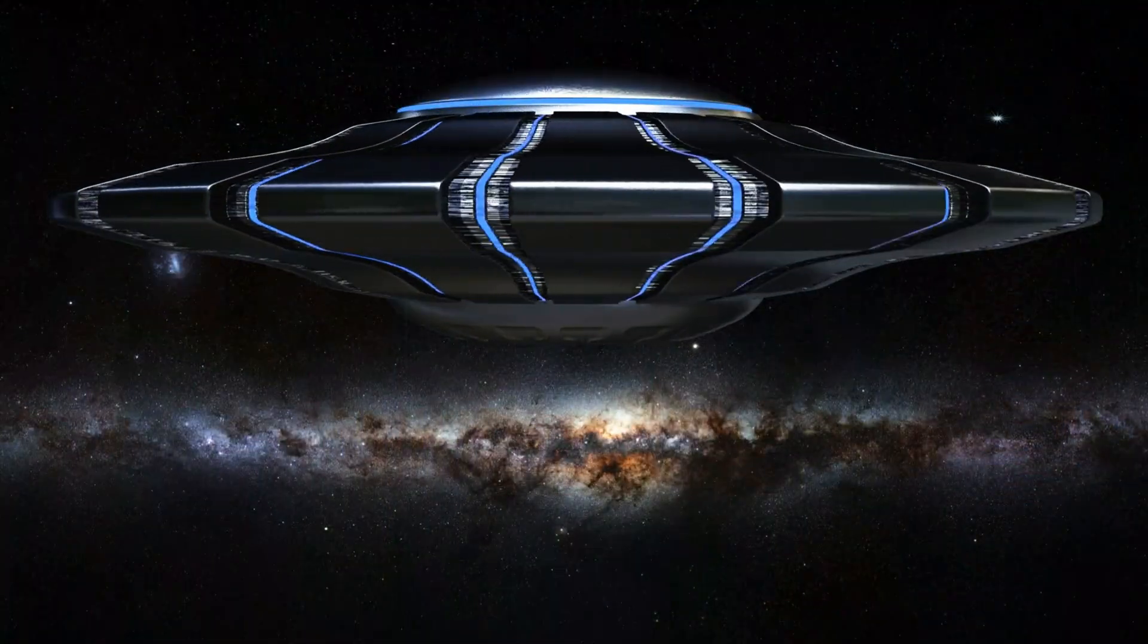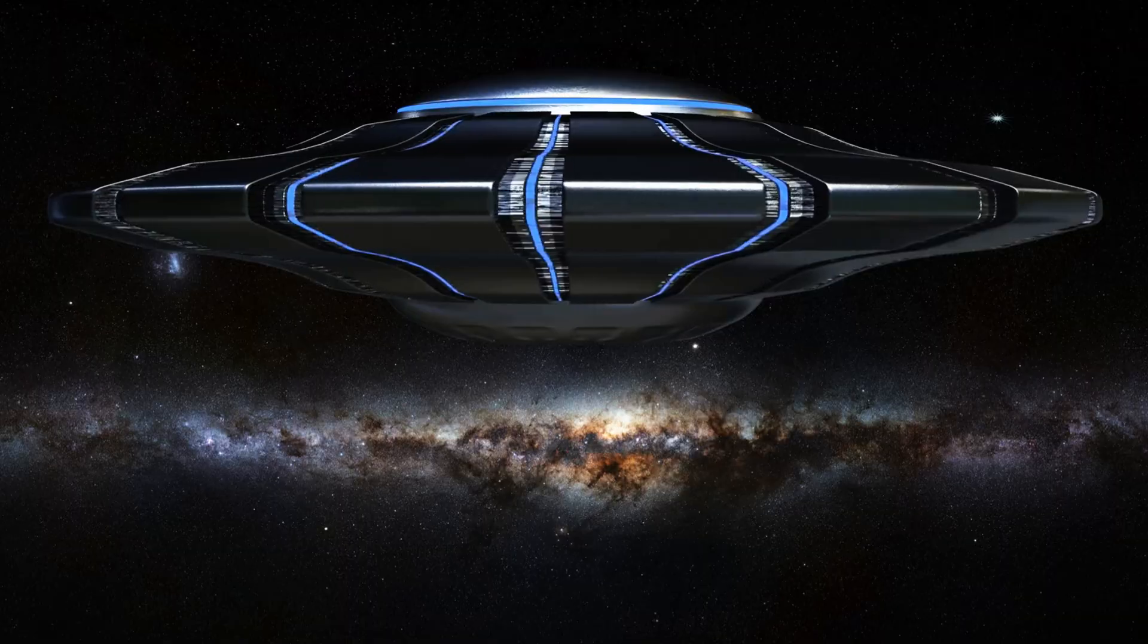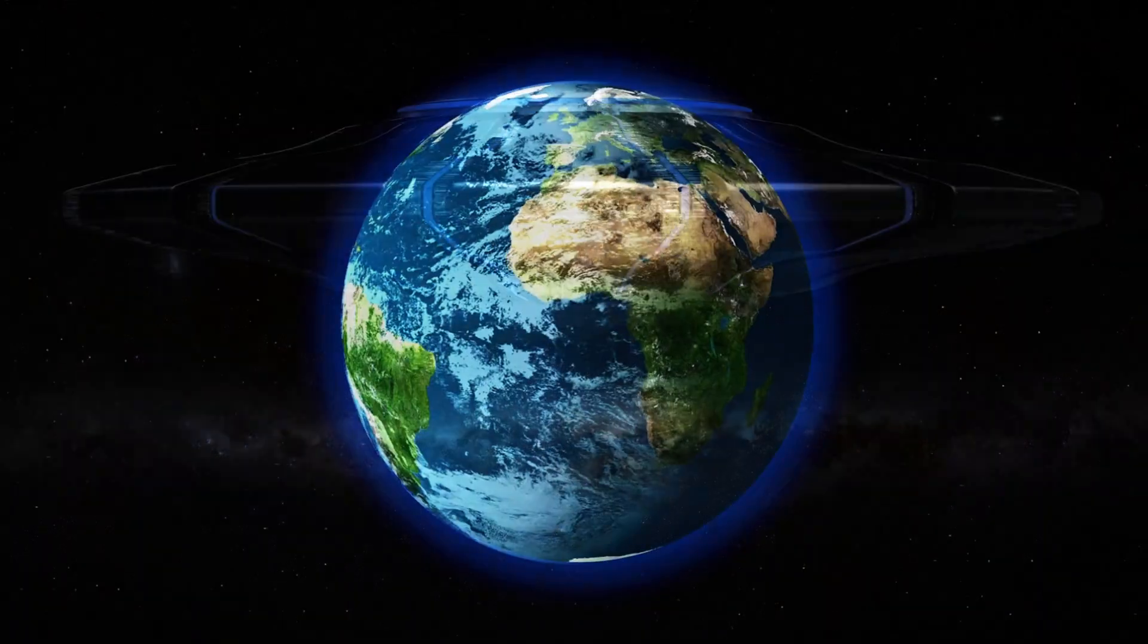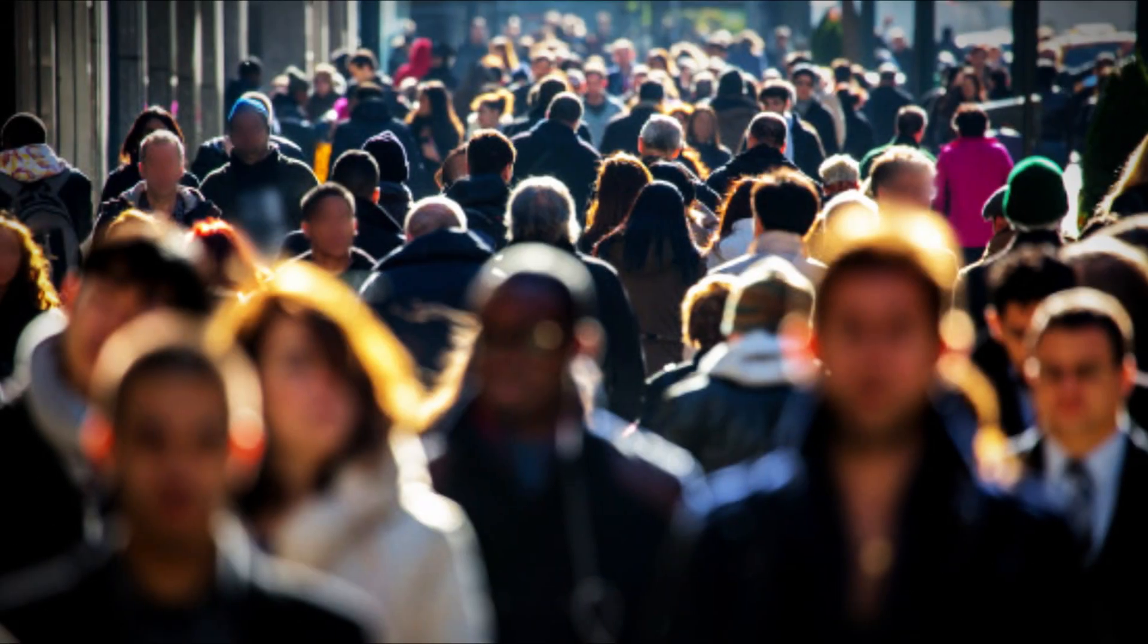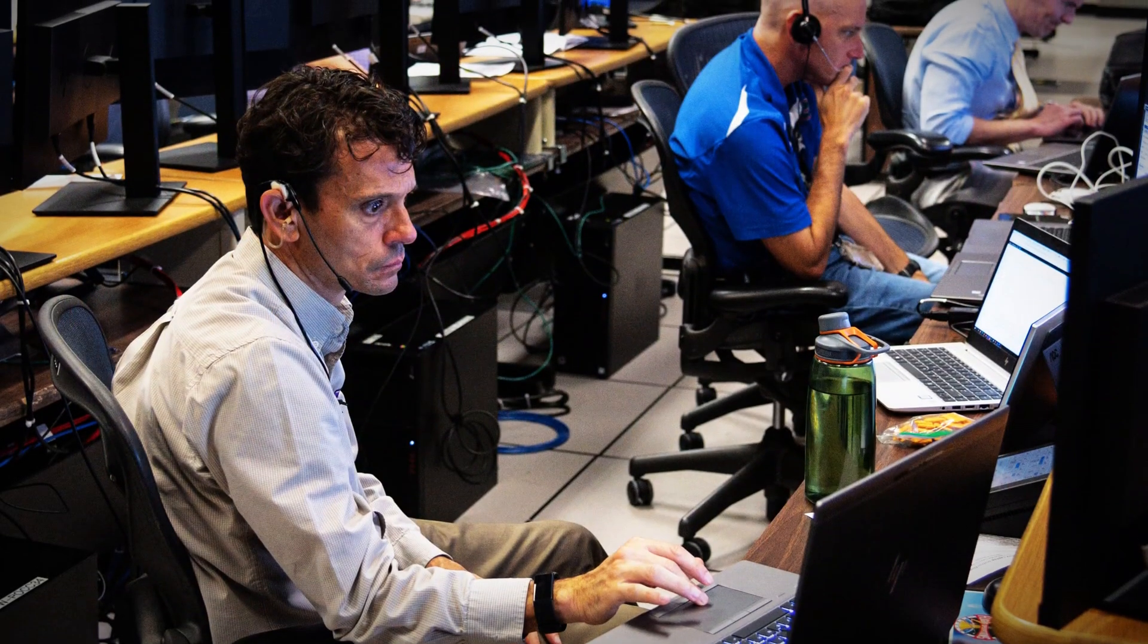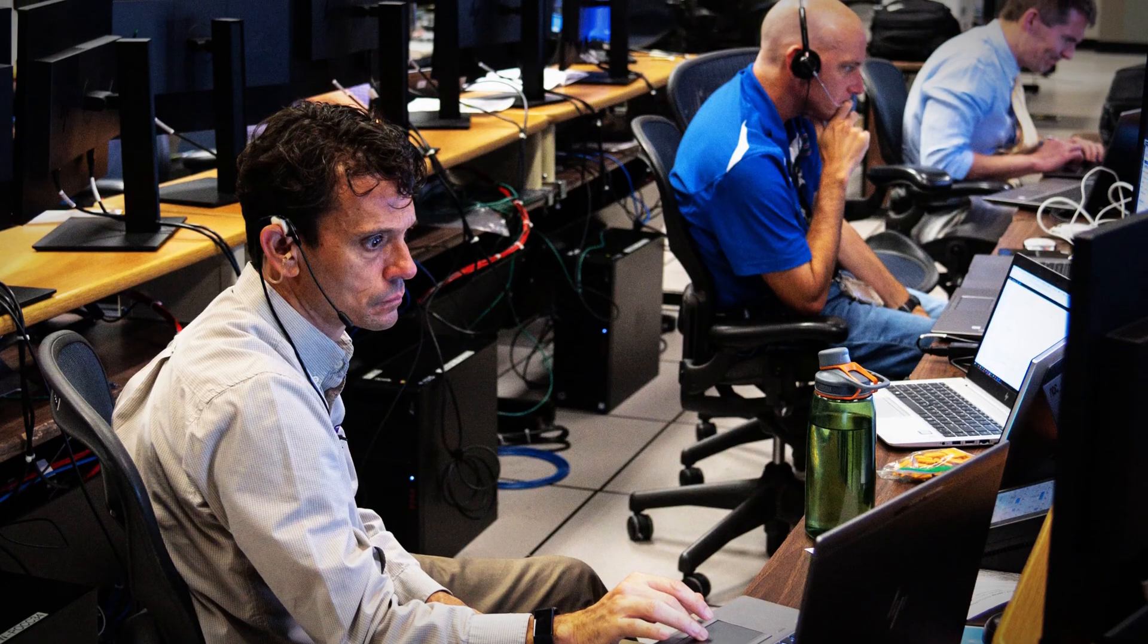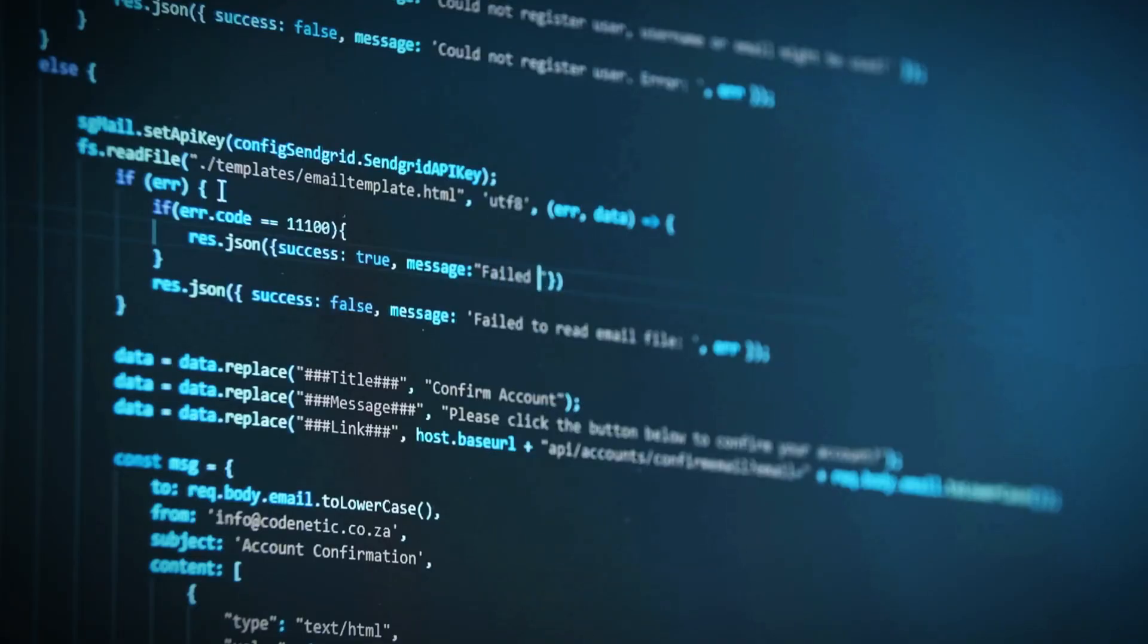The possibility of such an advanced extraterrestrial society has both excited and perplexed researchers. If verified, this could provide evidence of intelligent life beyond Earth, with societies far beyond what humanity has imagined. As NASA engineers study the city-like lights located 7 trillion miles away, they wonder how long these lights have been shining, perhaps waiting for humanity to develop the technology to detect them.